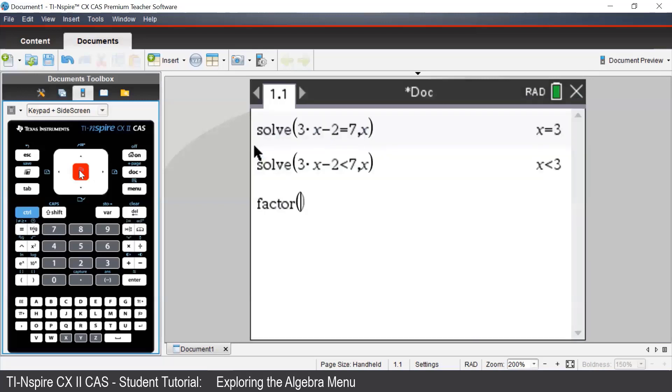To use this command, we enter in the expression. In this case, we will factorize y squared minus 5. And then we press a comma, followed by the pronumeral that we're interested in, in this case, y.